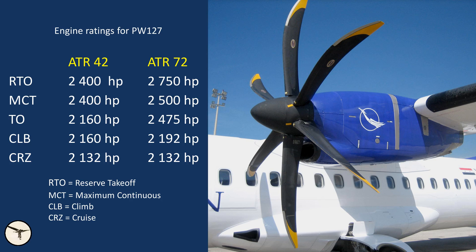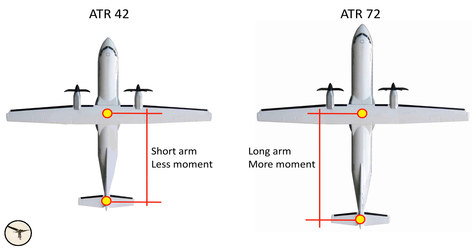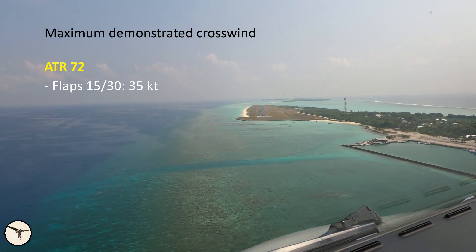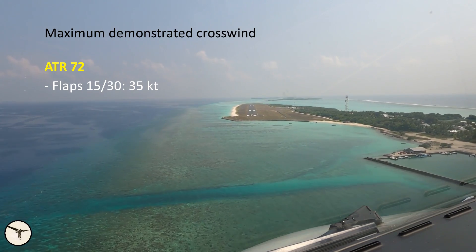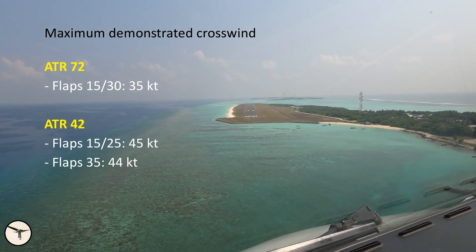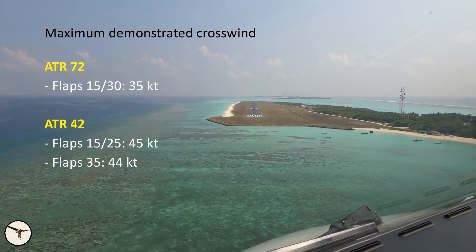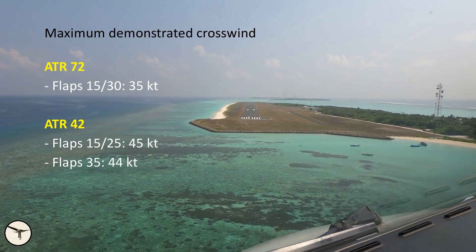The other ratings are shown here. But the longer fuselage has another effect. When operating in crosswind, the wind will push on the tail fin, and the longer the arm, the higher the moment. ATR 72 has a maximum demonstrated crosswind limitation of 35 knots. ATR 42 has 45 knots crosswind with flaps 15 and 25, and 44 knots with flaps 35.